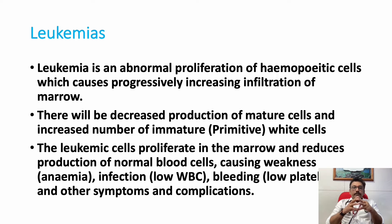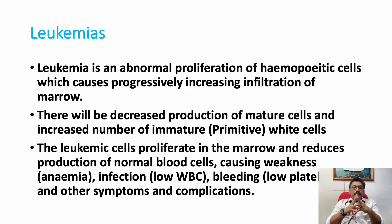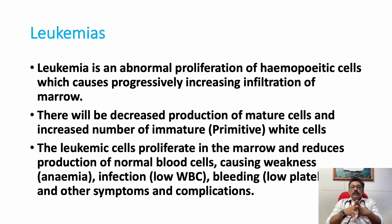Leukemia is an abnormal proliferation of hemopoietic cells, especially white blood cells. When these white blood cells are excessively produced, these cells are immature — they cannot perform their activities. They also invade the bone marrow and reduce the space for production of RBCs, so the patient develops anemia. They also reduce the production of platelets, causing bleeding tendencies. The WBC counts are very high but they are immature cells; they cannot perform the activities of normal white cells, so immunity can be low.